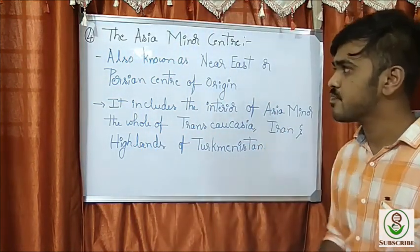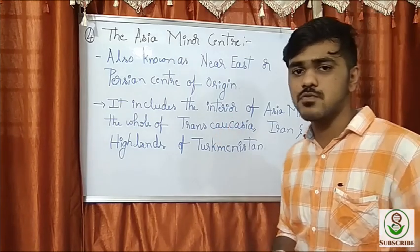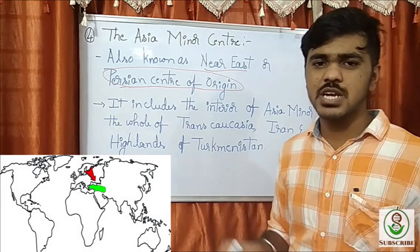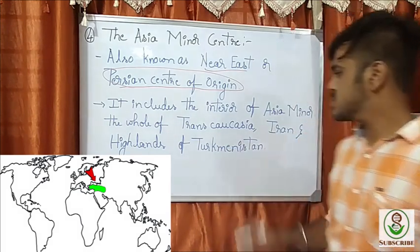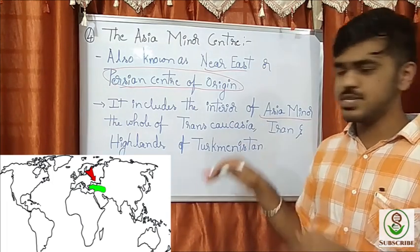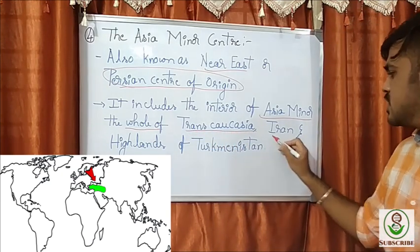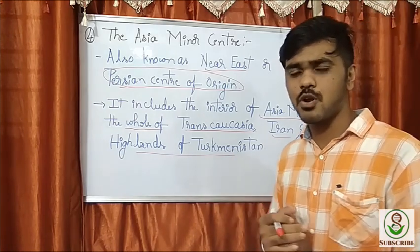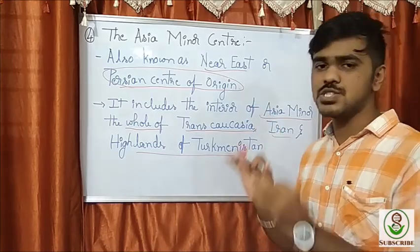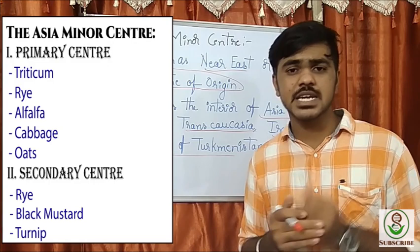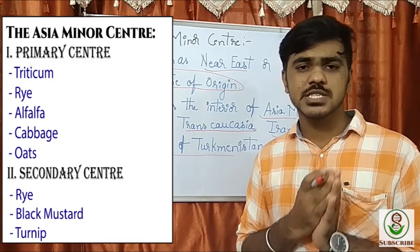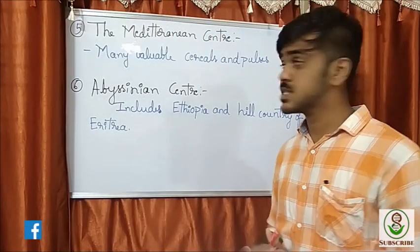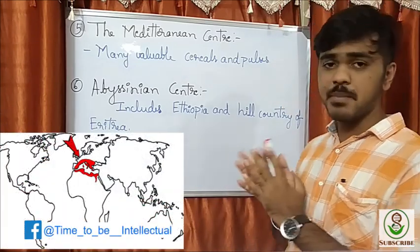The fourth center of origin given by Vavilov is the Asia Minor center, also known as the Near East or Persian center of origin. It includes the interior of Asia Minor — the Persian region, the whole of Transcaucasia, the country of Iran, and the highlands of Turkmenistan. It is the primary center of origin for crops like triticum, rye, alfalfa, cabbage, and oats, and the secondary center for grape and black mustard.